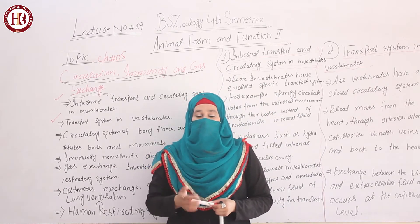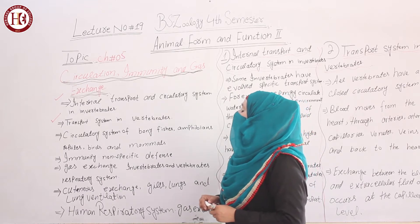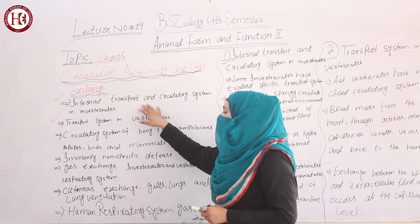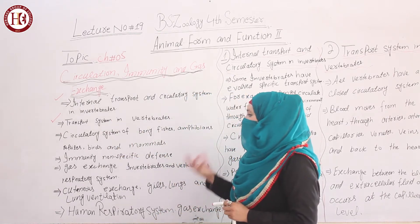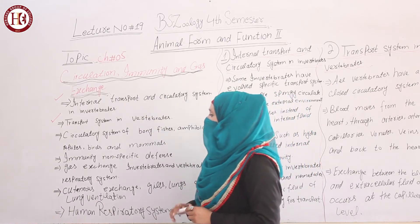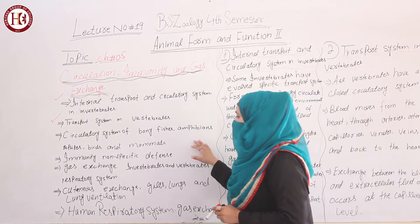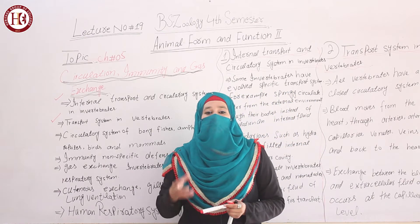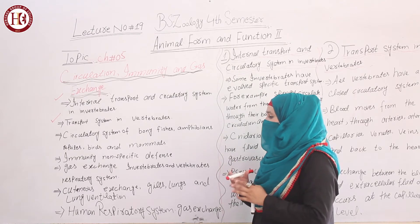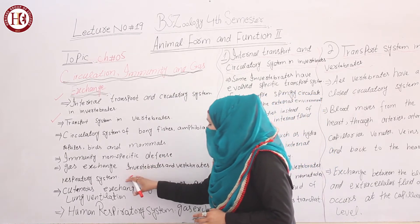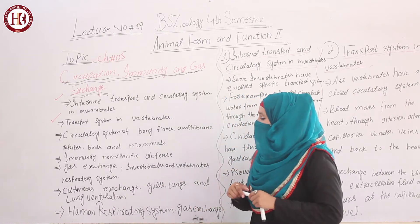In this chapter, the main topics we have to discuss are: first, internal transport and circulatory system in invertebrates — how internally transport happens for different gases and how the circulatory system works. Transport system in vertebrates — how the vertebrate transport system differs from invertebrates. Circulatory system of bony fishes, amphibians, reptiles, birds and mammals. Next, immunity and non-specific defense, and gas exchange in both invertebrates and vertebrates respiratory systems.